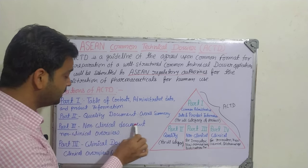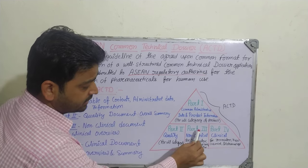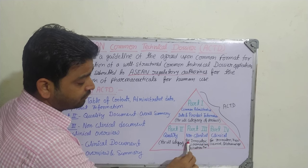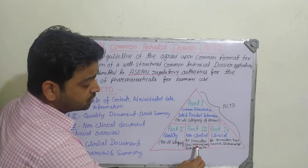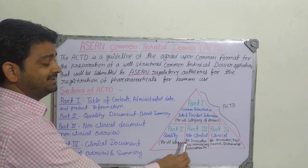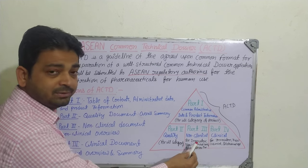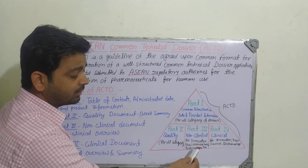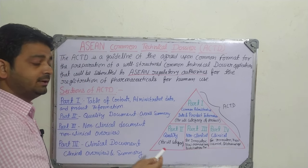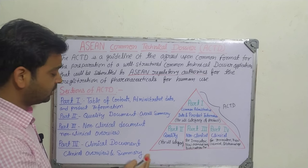Part three is non-clinical documents — non-clinical overview. As you can see in the triangle model, part three is for non-clinical, and it is for innovator, new chemical entity, and biotechnological products only — not for all categories of product. Innovator means branded drug, new chemical entity means a new drug, or any biological products. For these, part three gives the non-clinical details.